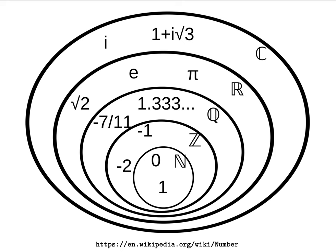Here's a diagram that explains how all of these sets are related to each other. In the very middle are the natural numbers, consisting of whole numbers such as 0 and 1. Slightly larger, we have the integers, which include negative numbers such as negative 1 and negative 2. That is encompassed by the rational numbers Q, which includes numbers such as negative 7 over 11 and 1.3333 repeating, which equals 4 thirds.